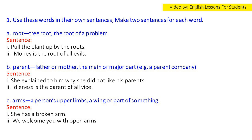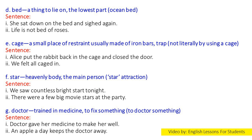B. Parent. Sentence: She explained to him why she didn't like his parents. Idleness is the parent of all vice. C. Arms. Sentence: She has a broken arm. We welcome you with open arms. D. Bed. Sentence: She sat down on the bed. Life is not a bed of roses. E. Cage. Sentence: Alice put the rabbit back in the cage and closed the door. She felt all caged in.